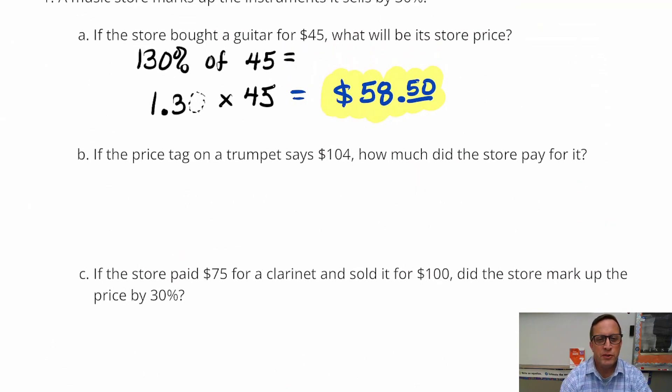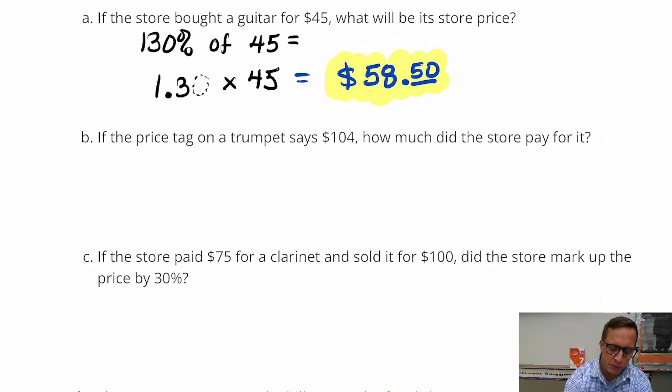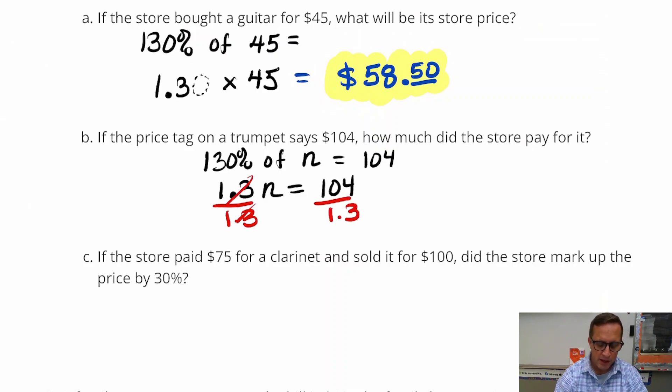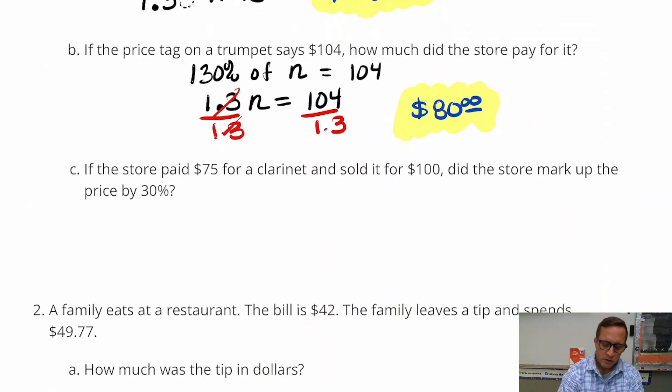All right, the price tag on a trumpet says 104. How much did the store pay for it? Okay, again, let's put that into equation form. Now this time, we're not going to do 130%, we're not looking for 130% of 104. We're looking for 130% of what number equals 104. So we're not sure what that initial price is. So our equation is going to look like this. 1.3 N equals 104. All right, and now this is just a matter of dividing both sides by 1.3. So you do that, and you do 104 divided by 1.3, and you get 80.